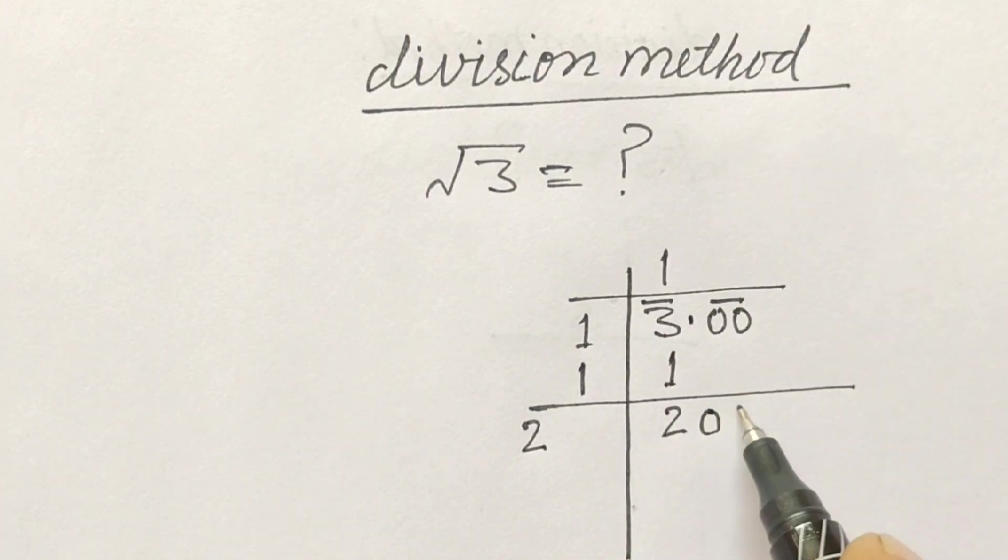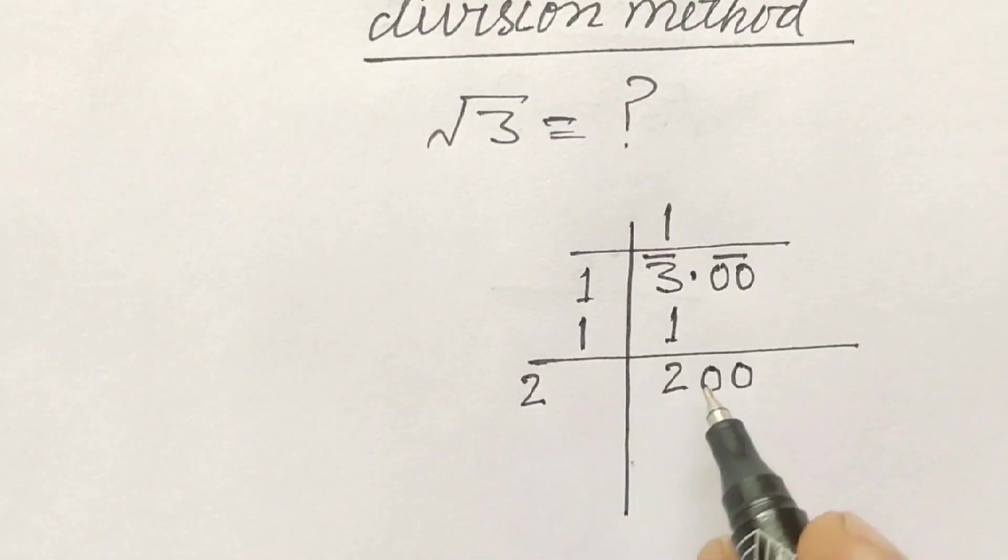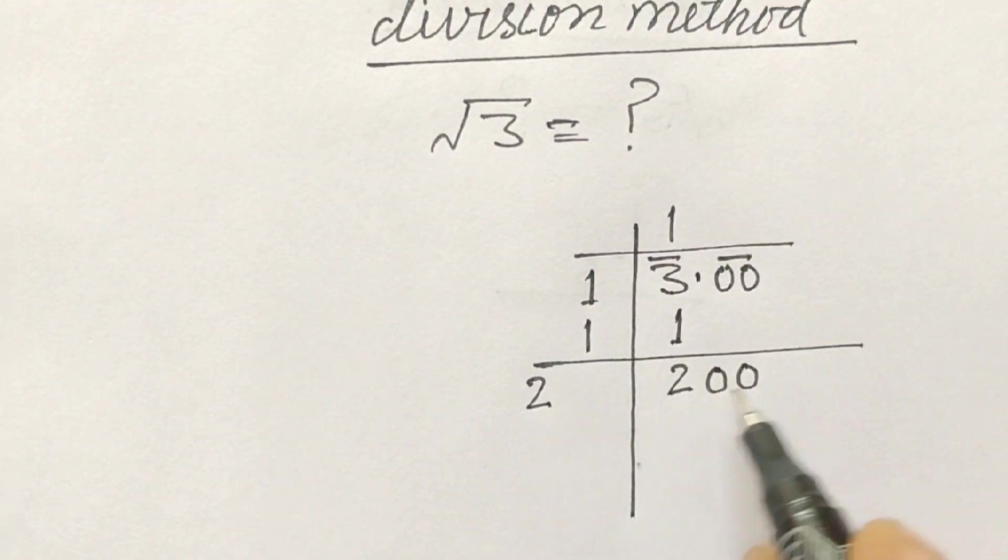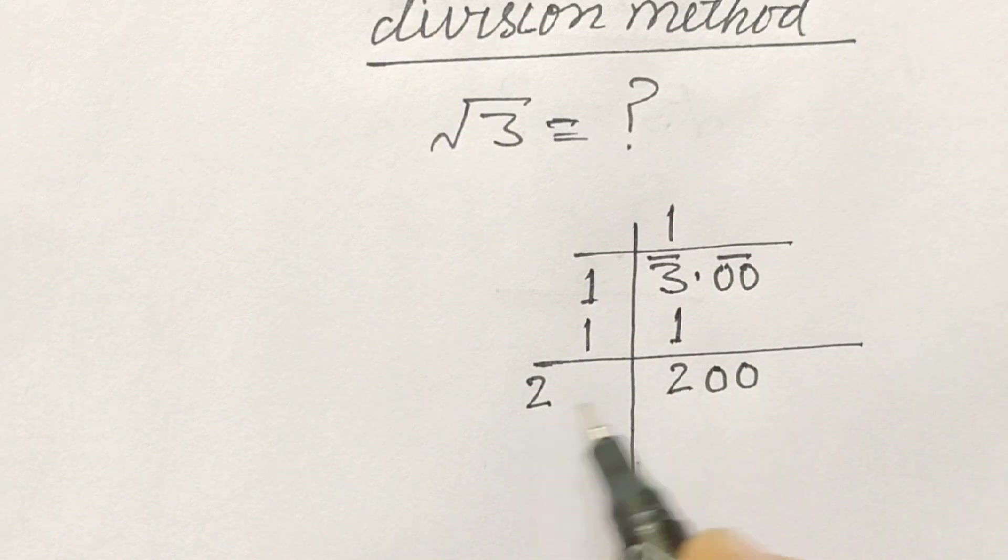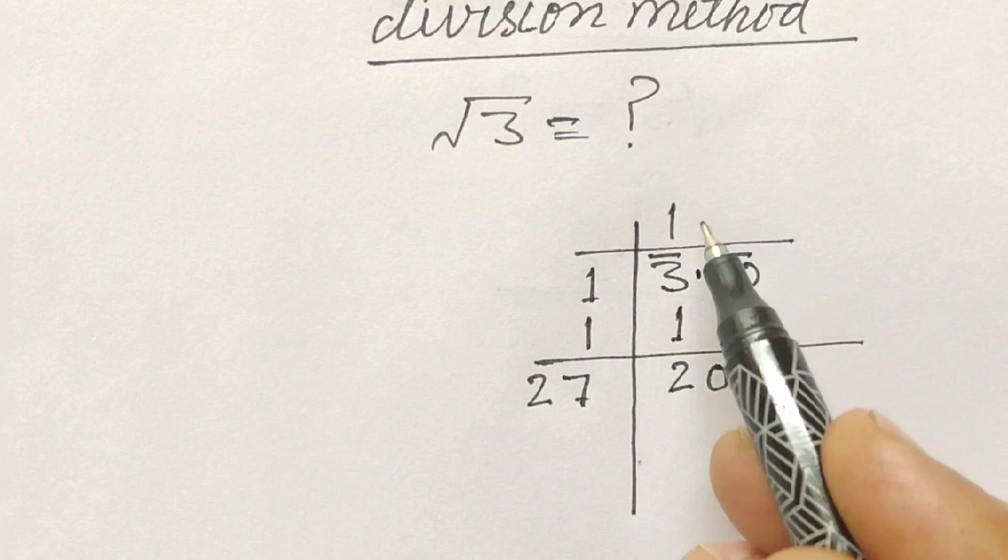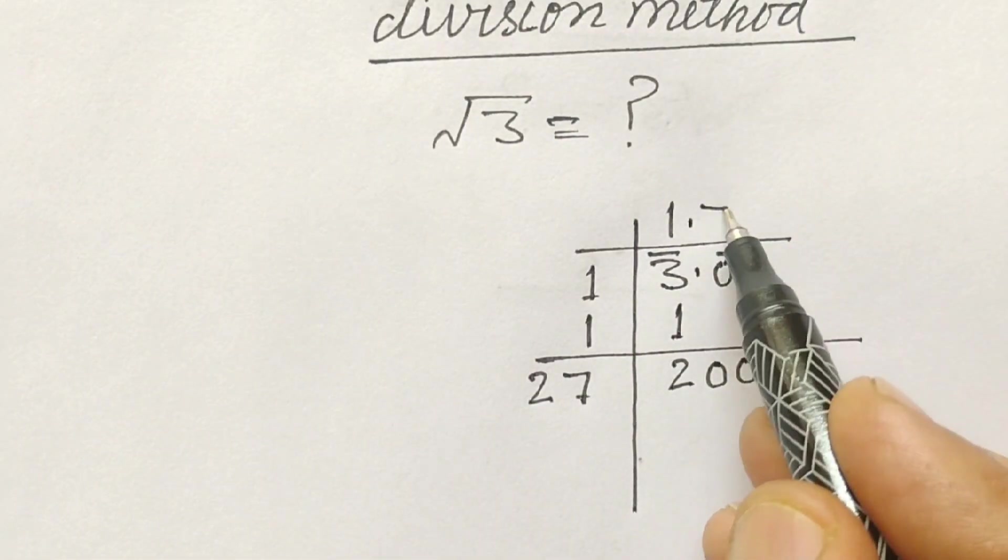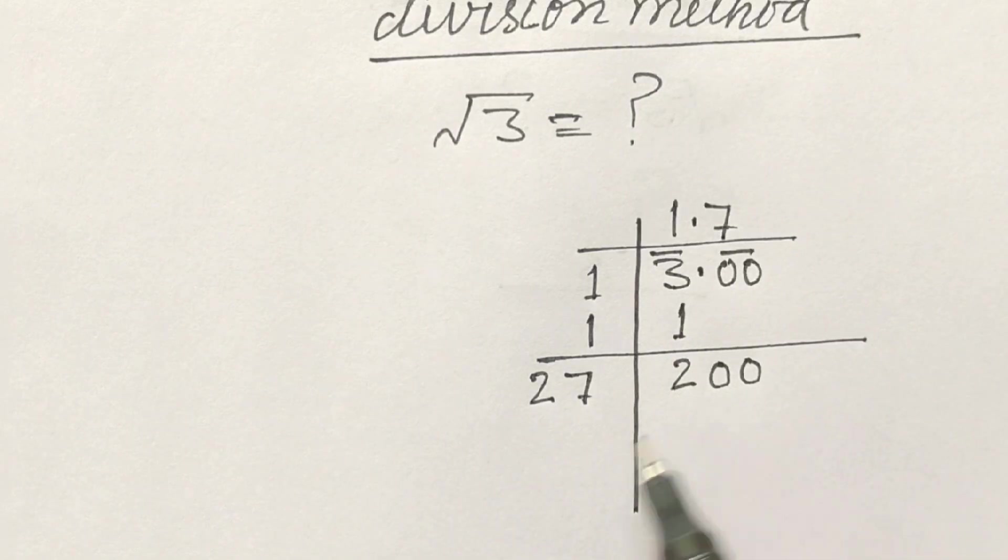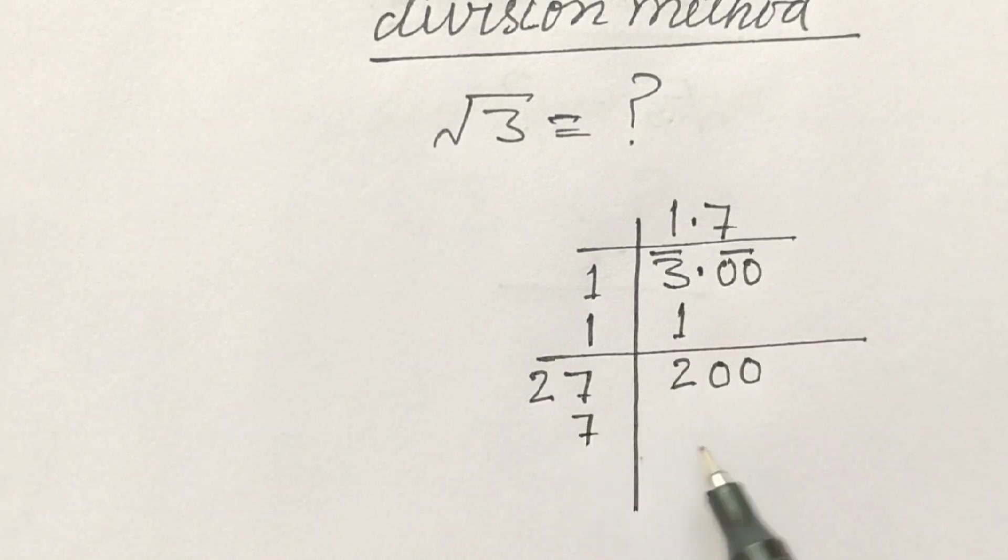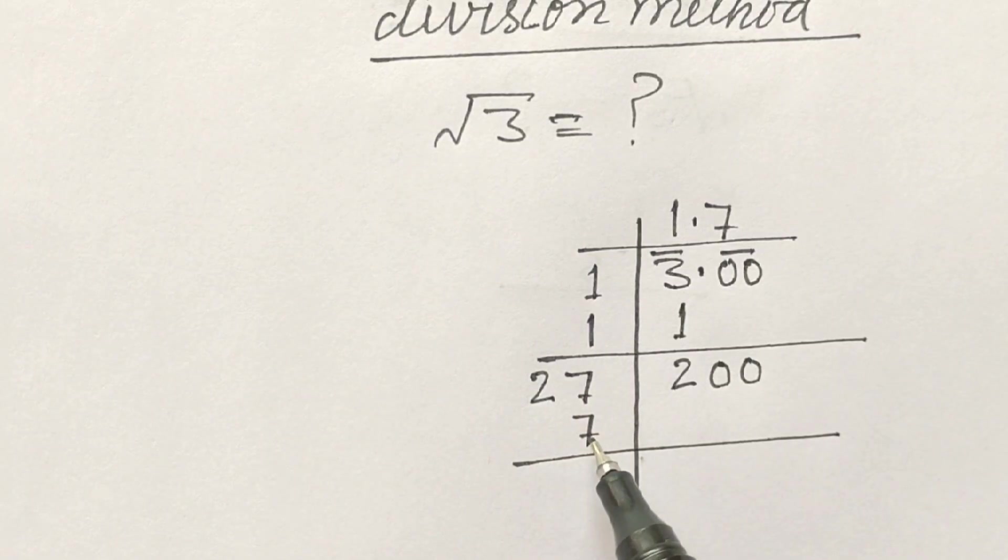Now what will we do? We will write down 0 with pair. In the next step we will divide 200 by 27, 7 times. We will write 7 here and here we will make a point and then 7.